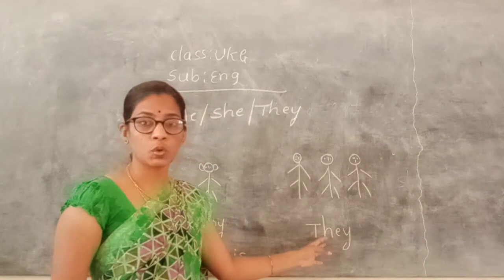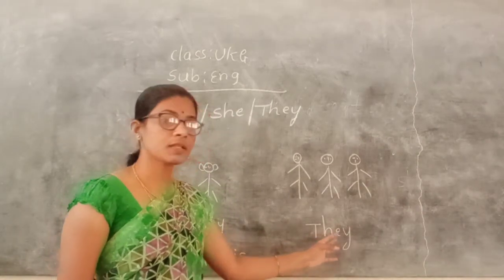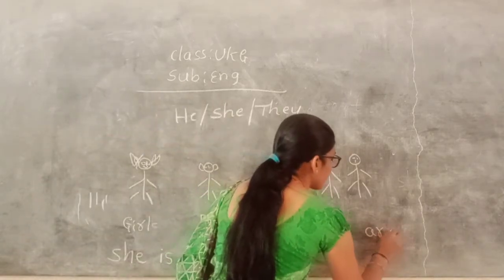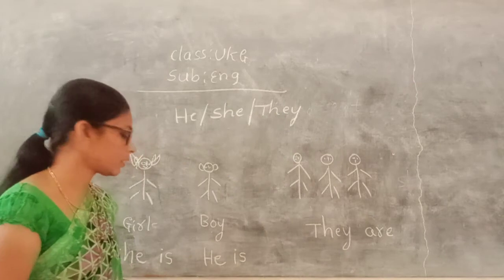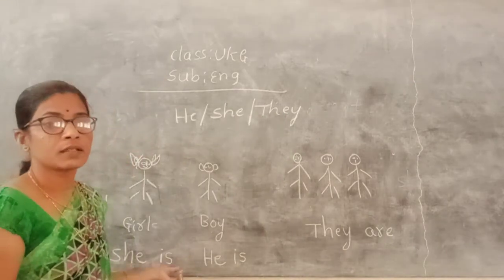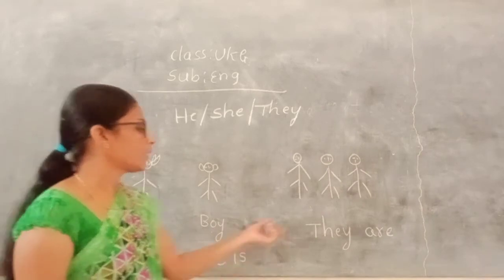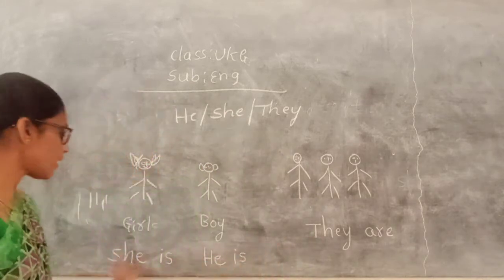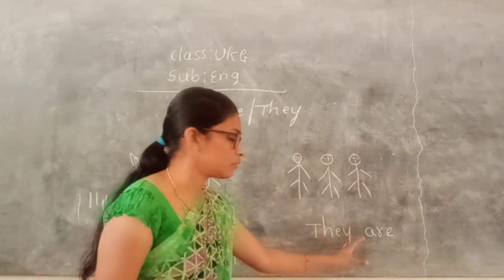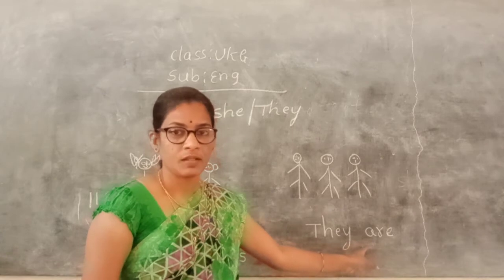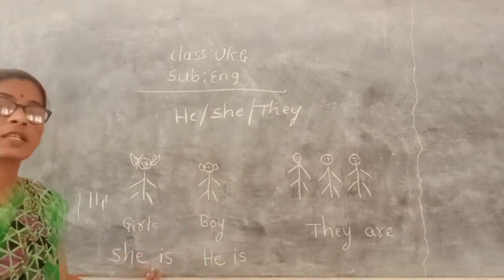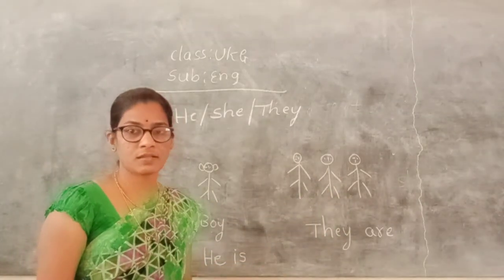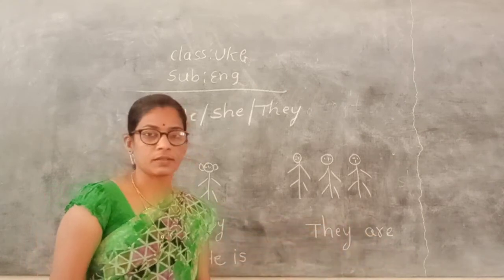Is it more than one? Now, this is more than one. We will use are. This is a singular. This one is plural. Plural. This is called plural. This is singular. Singular is single. This is plural. Clear, children?